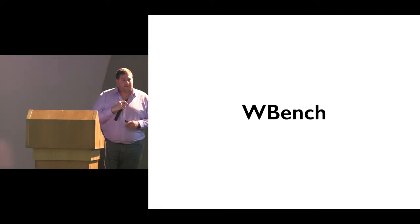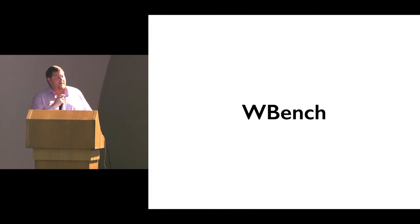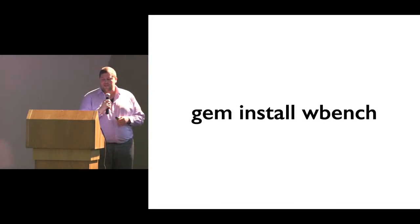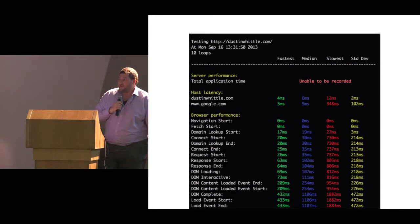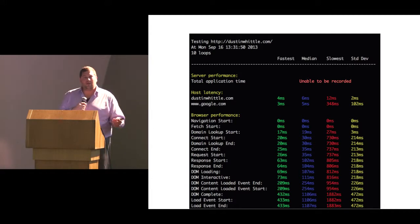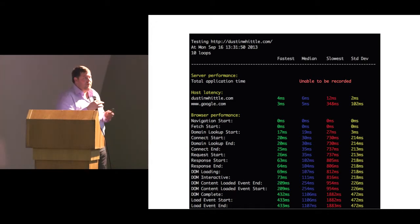The W3C released the Navigation Timing API, which lets you easily track client-side performance in JavaScript. But how do you automate that without manually spinning up a browser each time? I discovered a great tool called wbench. Simply gem install wbench, then call wbench with a URL. It gives you a breakdown of W3C navigation API timings: first byte time, DNS lookups, SSL negotiation, time waiting for CSS and JavaScript to load, and DOM render time. As you change your application you can see the performance improvements with every commit.